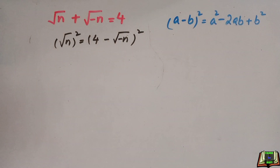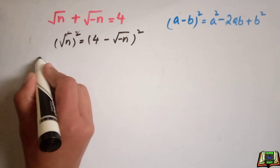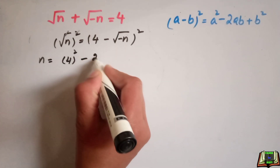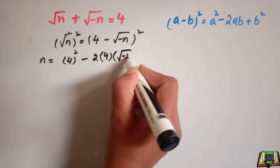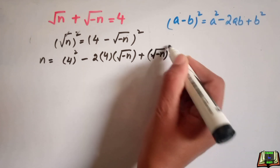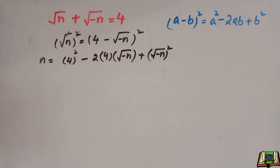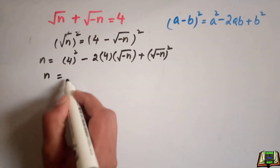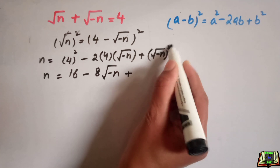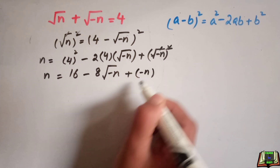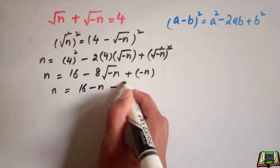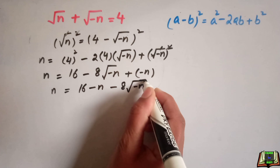So we are going to simplify this equation. This is equal to n, because square and root cancel out, and this is equal to 16 minus n, giving us: n equals 16 minus 8 times square root of minus n, plus minus n, which simplifies since the minus n terms combine.